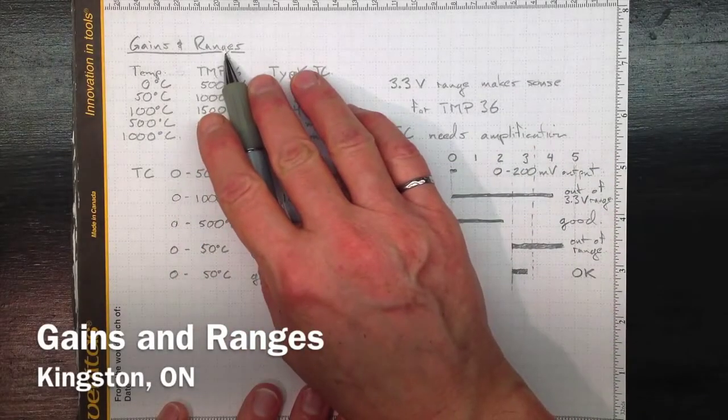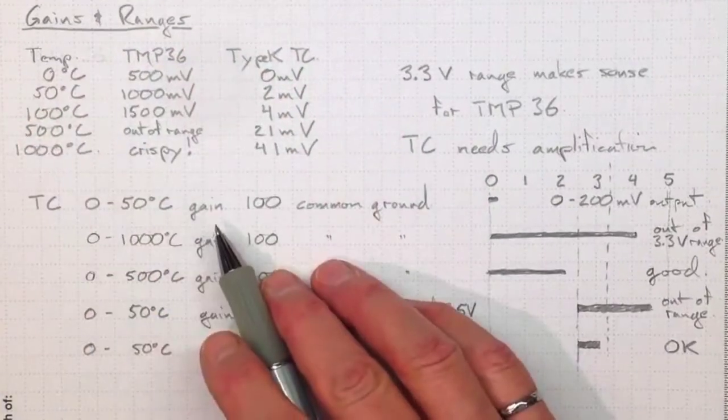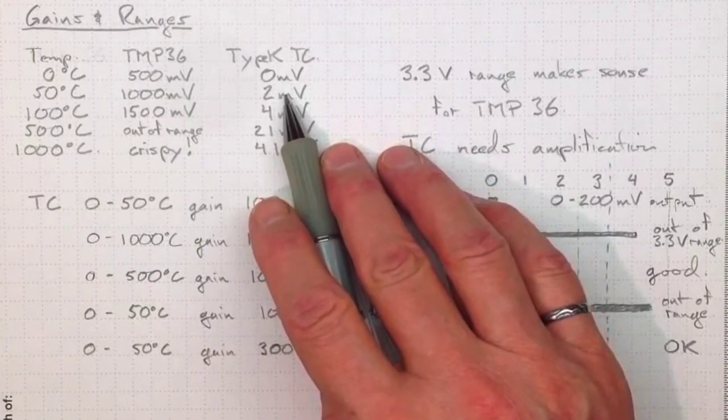If you're trying to figure out which voltage ranges you should use for your data acquisition and what gains you should use for your amplification, you really need to look at what type of transducers you're using.